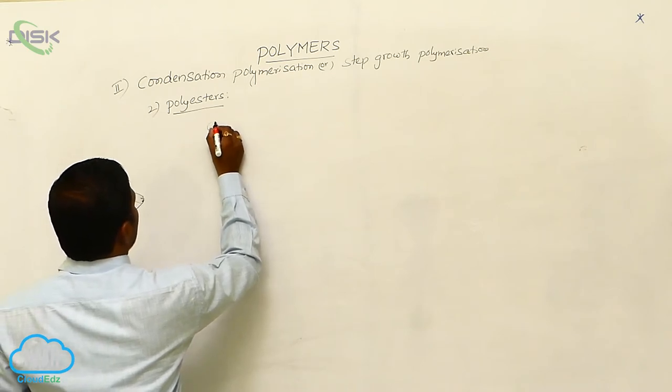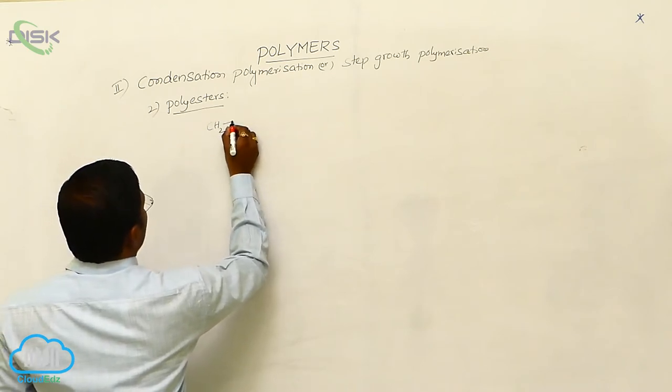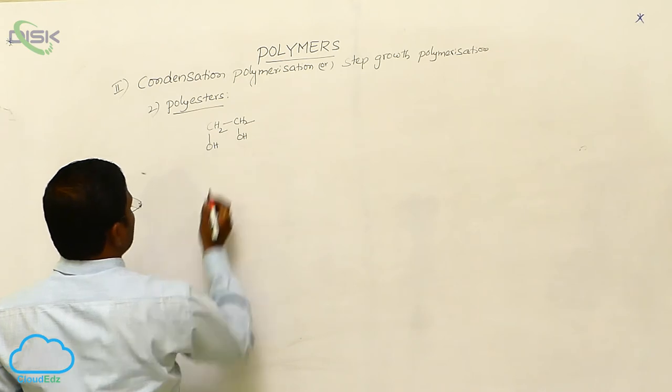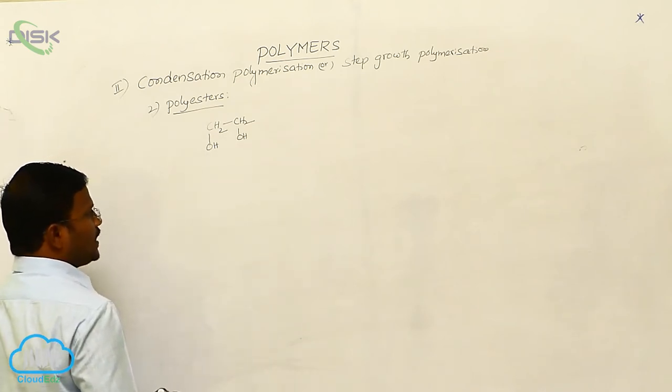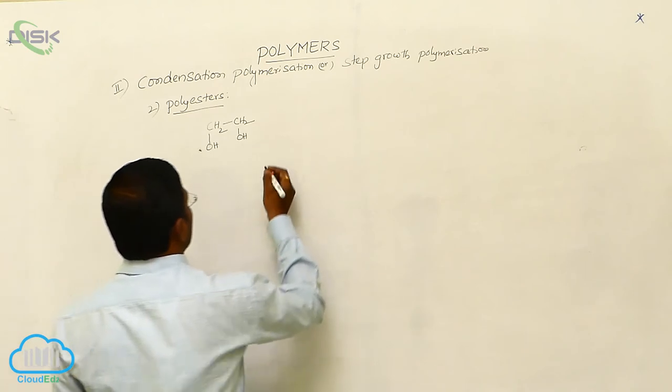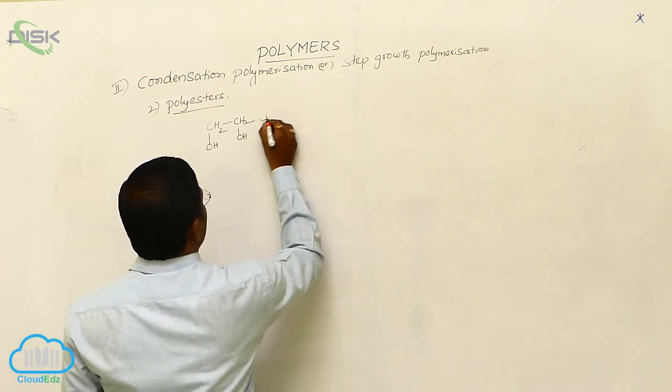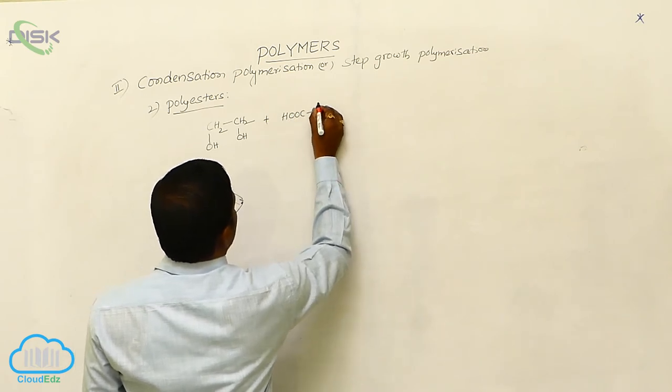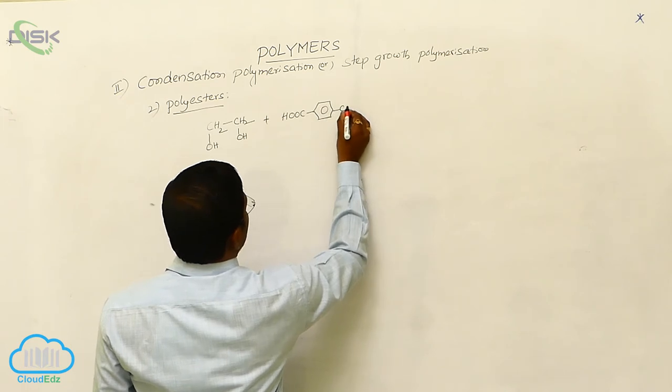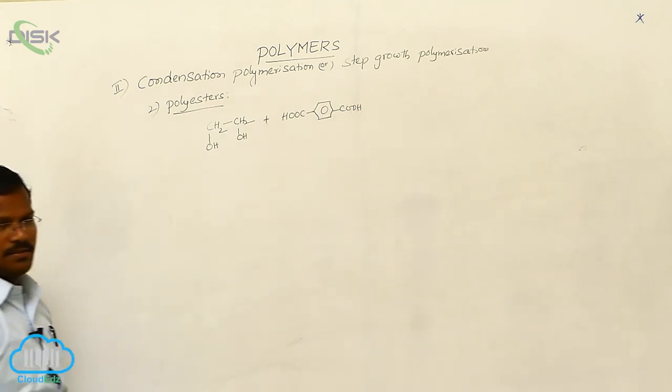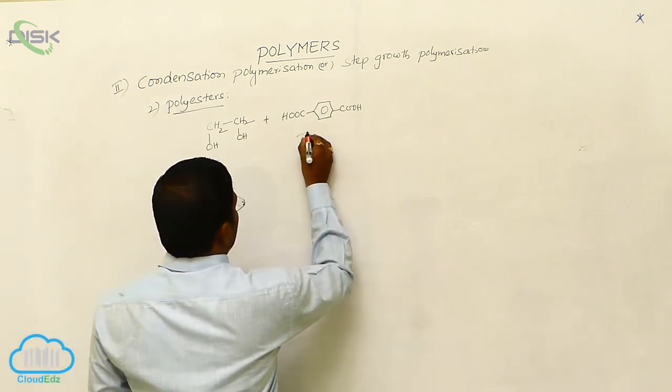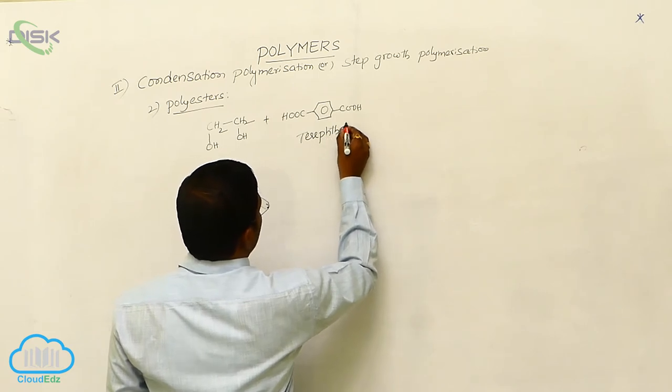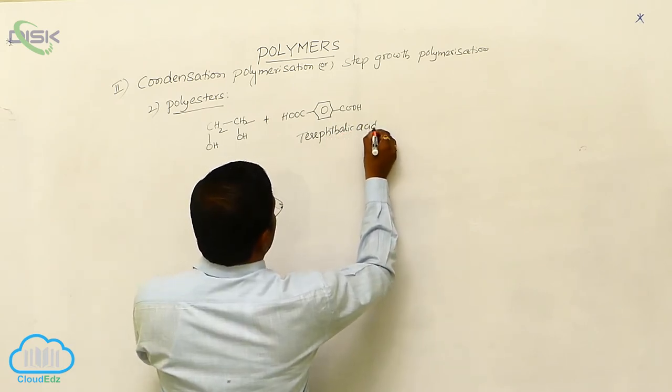When ethylene glycol, 1,2-dihydroxyethane or ethylene glycol reacts with... what is this? Terephthalic acid.